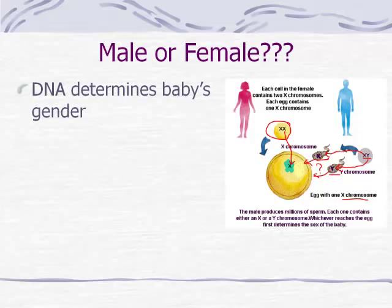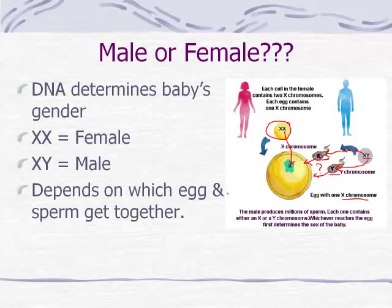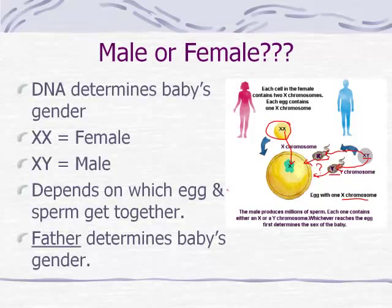The DNA that the dad donates through his sperm is what determines the baby's gender. If it's the X sperm, then it will be two X's and it will be a female. If it's the Y sperm, it will be an X and a Y, and it will be a male. So it depends upon which egg and which sperm come together - this is kind of the father's big claim to fame. It's the father and the father's DNA through the sperm that determines the baby's gender.